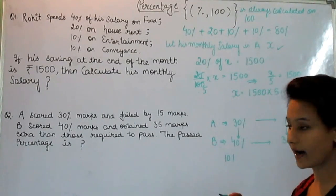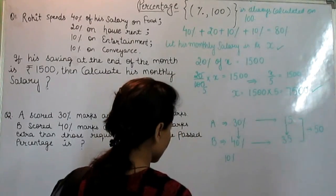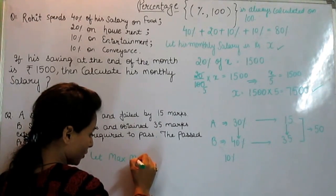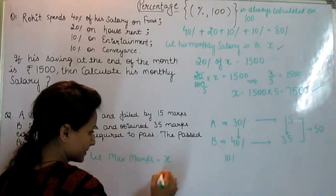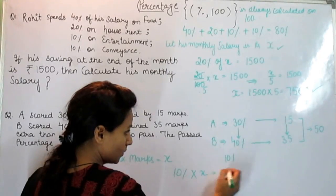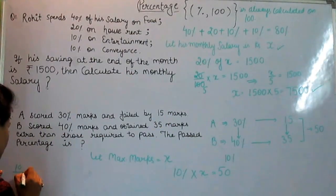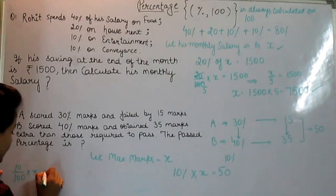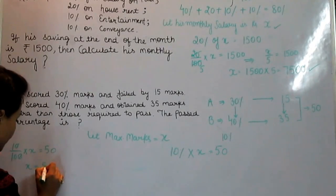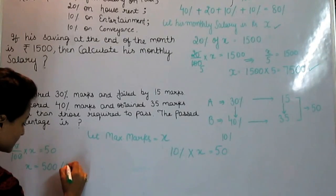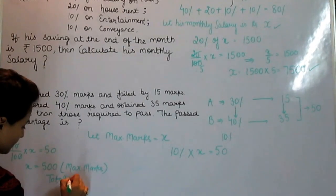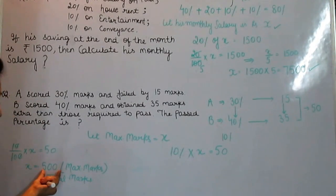Percentage is always calculated on 100. So see let maximum marks or total marks is equal to x. So 10 percent of total marks is equal to 50. From here we can get the value of x that is 500. It means 500 is maximum marks or total marks. So we get total marks.